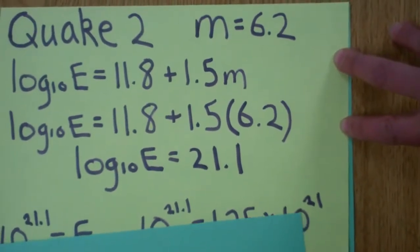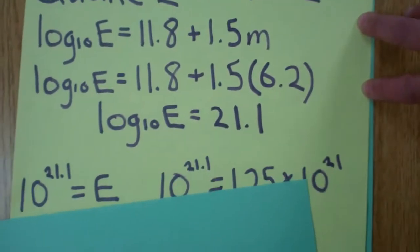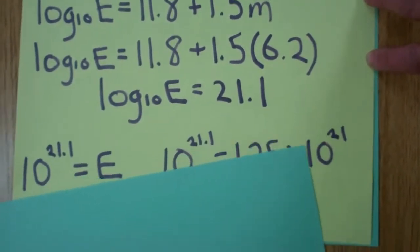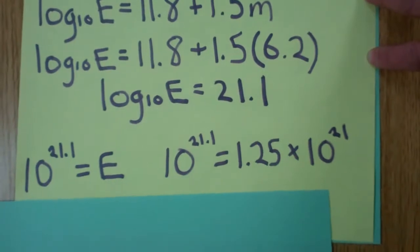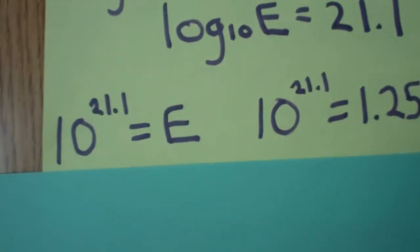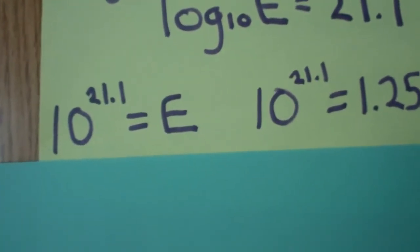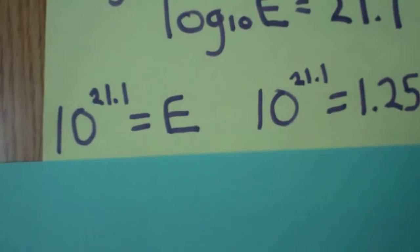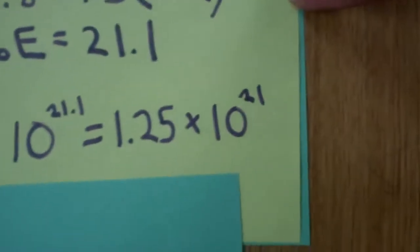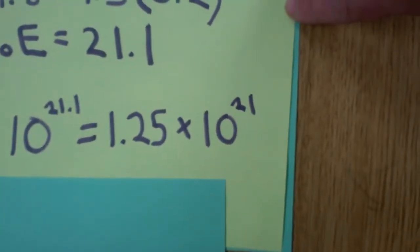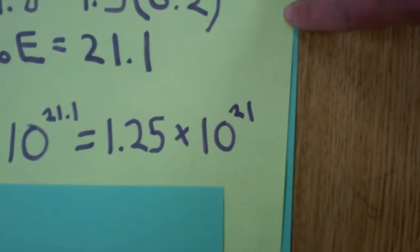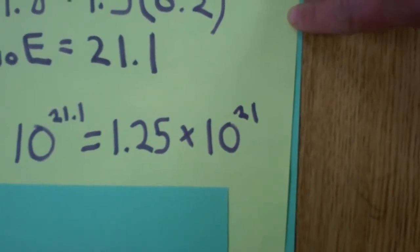You undo the log by taking a power of 10 on each side. This equals 10 to the power of 21.1 equals E. We then transfer this into scientific notation, which is 1.25 times 10 to the power of 21.